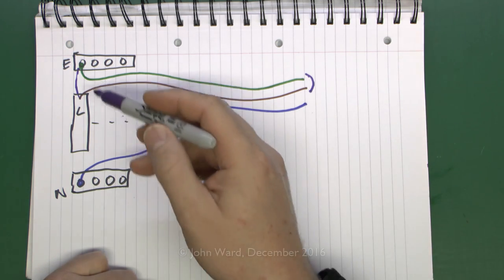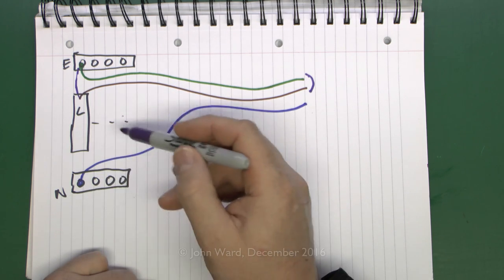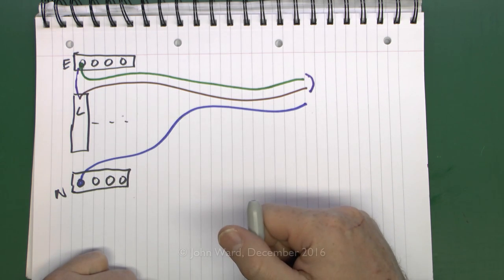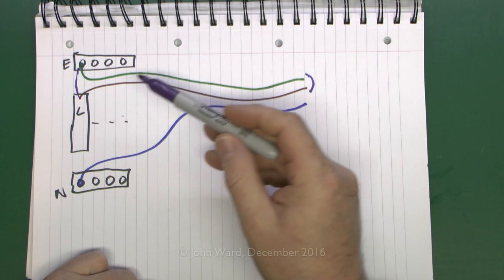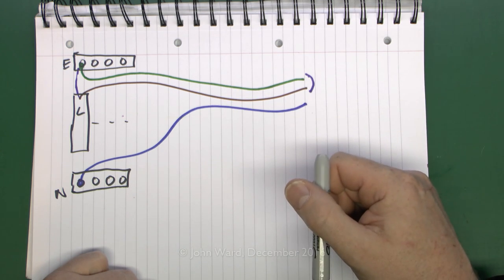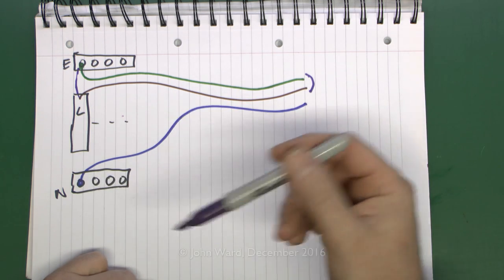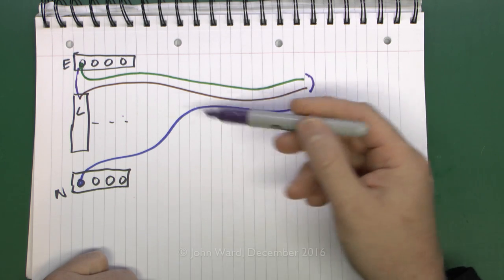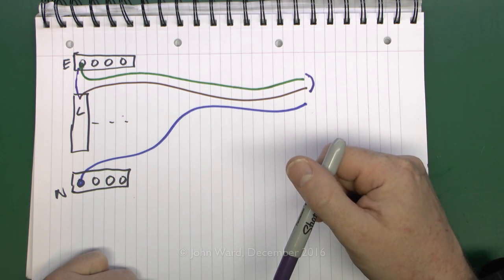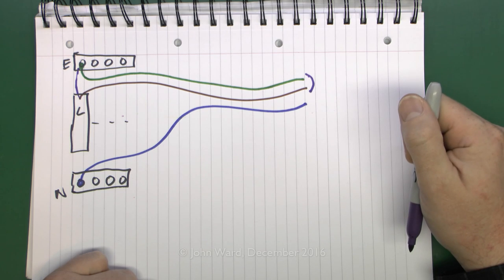But even if you have done that, you still need to make sure that the supply coming into the building is connected correctly inside the consumer unit. Otherwise you could end up with the entire installation connected with the wrong polarity, or in other words line and neutral reversed, which would override any of the previous tests you've done. You'd end up with the entire thing incorrect.